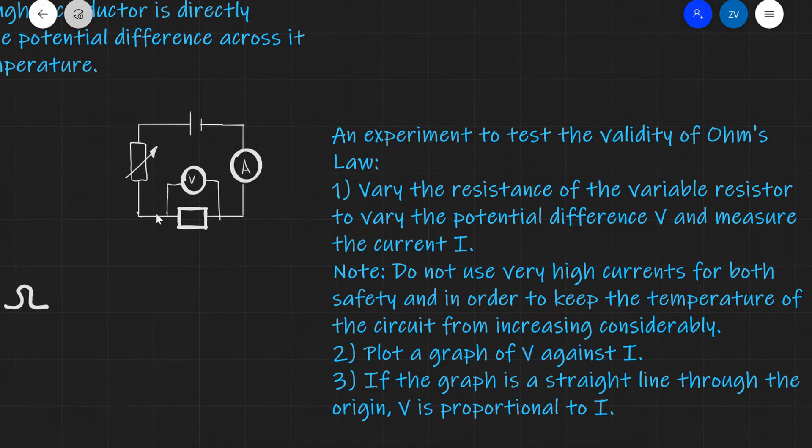As we vary the potential difference V, we're going to be measuring the current I. Now notice that we won't be using very high currents for both safety purposes—after all, we really don't want to set fire to this resistor—but also to keep the temperature of the circuit from increasing quite a lot, because this will affect our results.